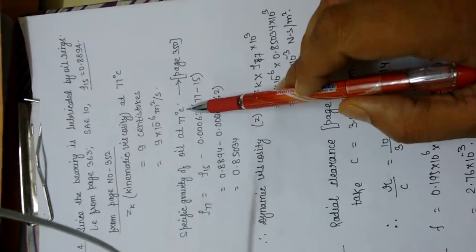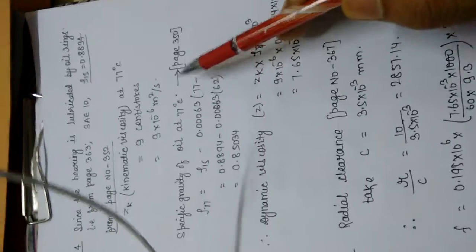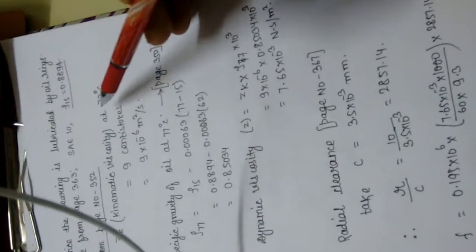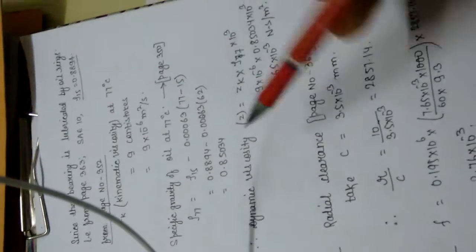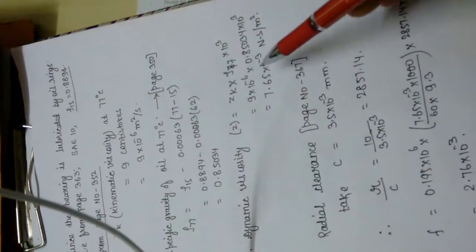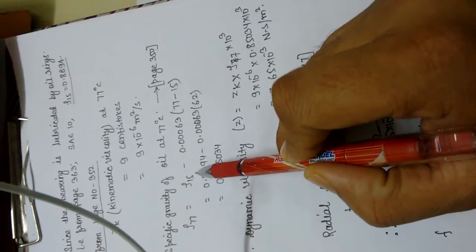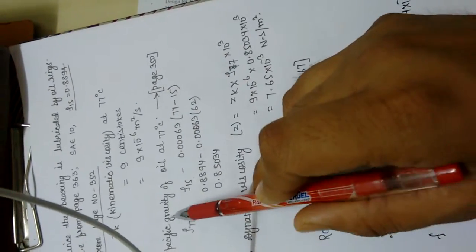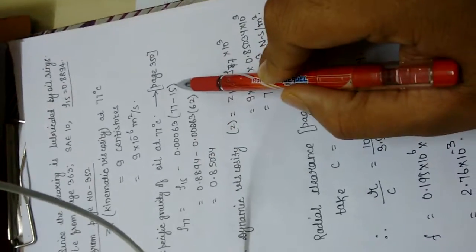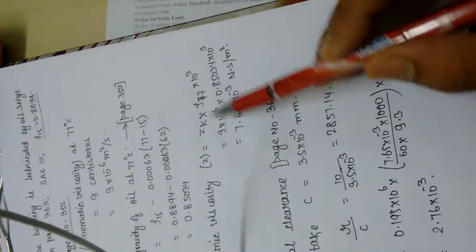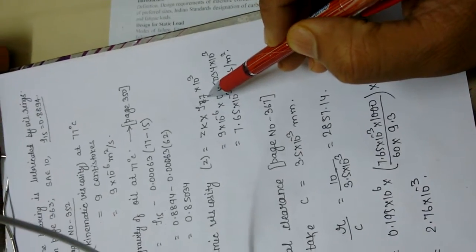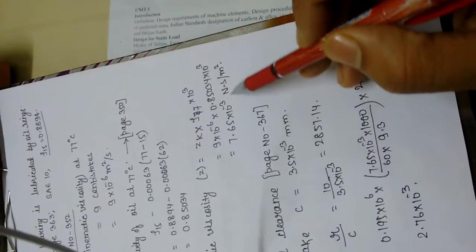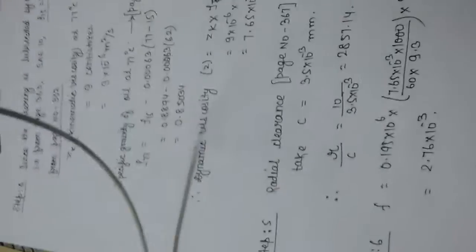Next, we find the specific gravity of oil at 77 degrees centigrade. Using the formula from page 350 of the design data book, we convert kinematic viscosity to dynamic viscosity using specific gravity at both 15°C and 77°C. Dynamic viscosity Z = ZK (kinematic viscosity) × ρ₇₇, where ρ₇₇ refers to density at 77°C. Finally, dynamic viscosity = 7.65 × 10⁻³ Newton·second per meter square.